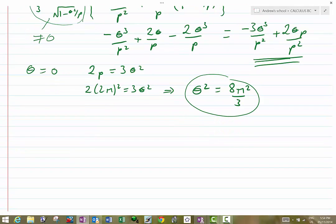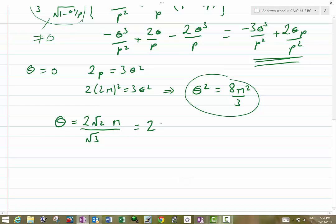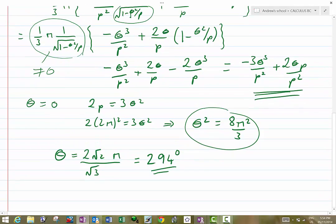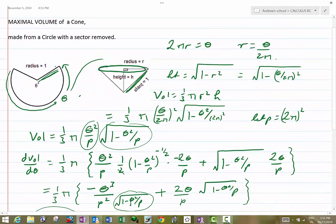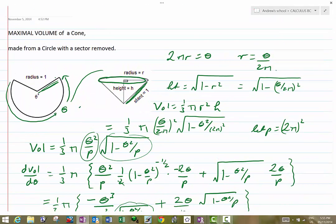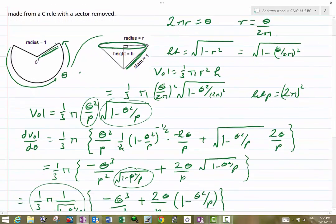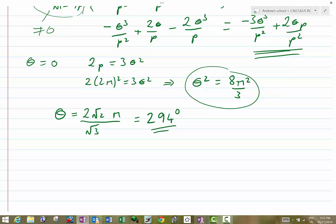Tidying this up a little bit, theta, the sector angle that we're going to keep, is going to be 2 root 2 pi over root 3. That's about 5 point something radians. And when you convert it to degrees, you end up with 294 degrees. The optimal angle for the sector you need for a cone of maximal volume is 294 degrees. Or in other words, we just take 66 degrees out of the circle at the front.